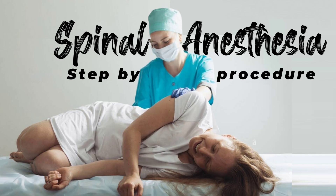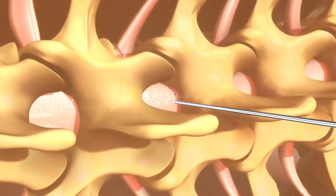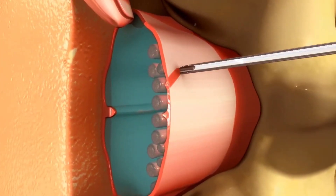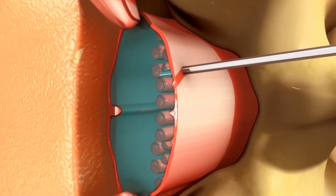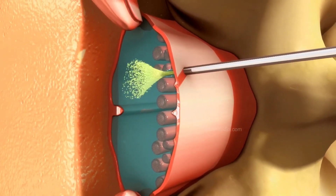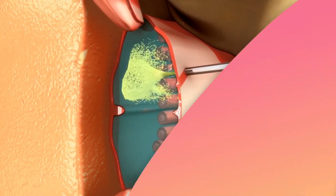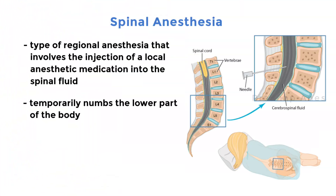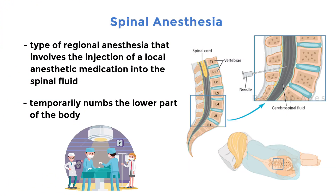Spinal anesthesia is a type of regional anesthesia that involves the injection of a local anesthetic medication into the spinal fluid. This temporarily numbs the lower part of the body, providing pain relief during surgical procedures.